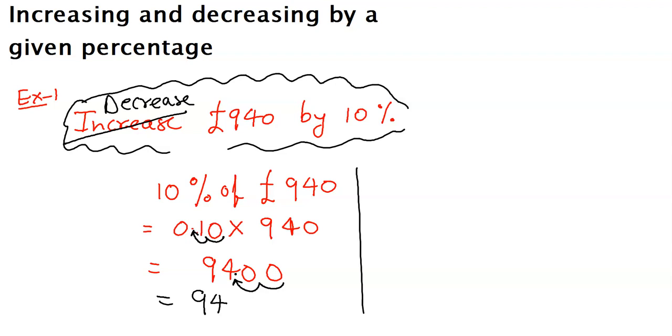Now for decrease, what we need to do? Decrease is giving a feeling of less. So what we need to do? Take away, yes. Take away 94. So for decrease is giving us feeling that it is going to be less. So for less, we need to do minus. So it will be 940 minus 94.